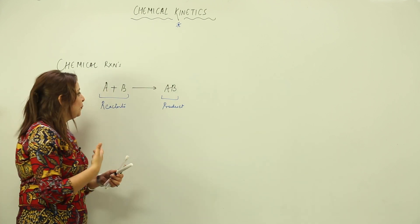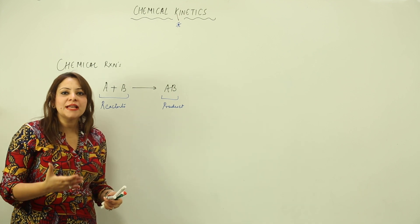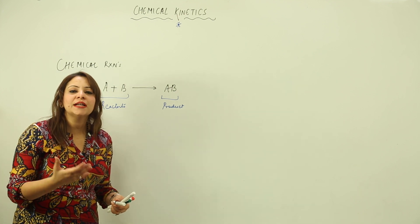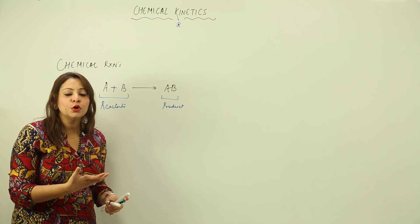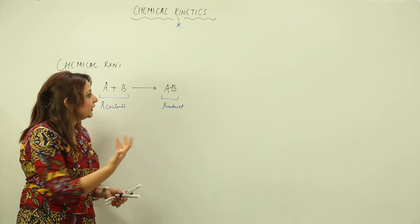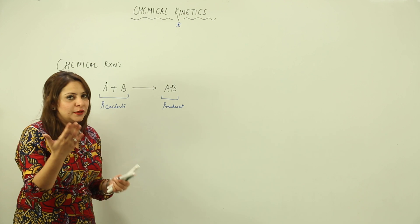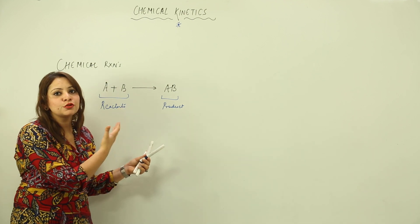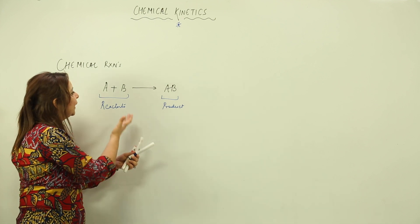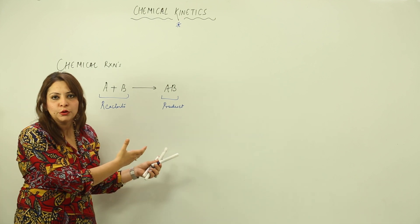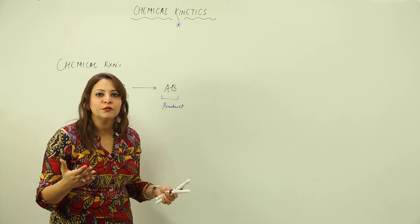In this example, I took two reactants and made one product. It is not always that the number of reactants is two — it can be one or more than two. Likewise, the number of products can also vary; it can be one, two, or three depending upon the reaction. In this example, I showed you a combination reaction, which is why I took two reactants and formed one product. For any other type of reaction, you can take examples accordingly.